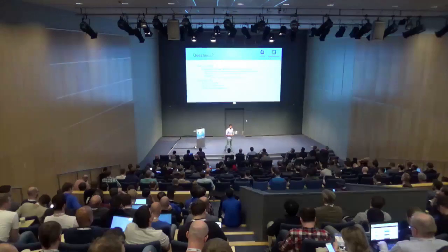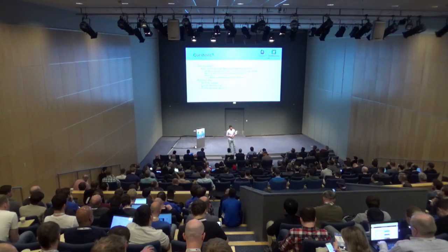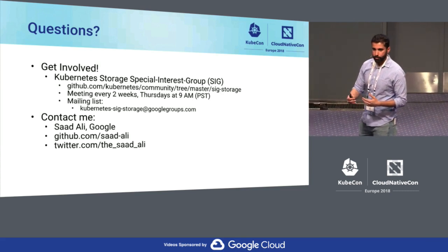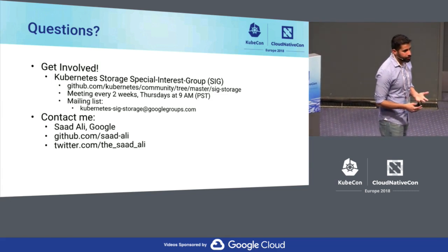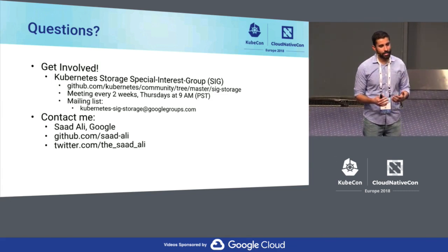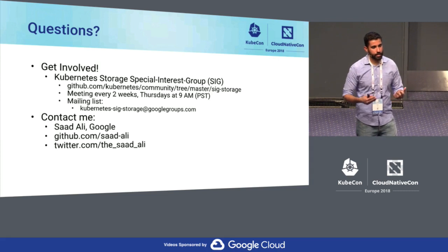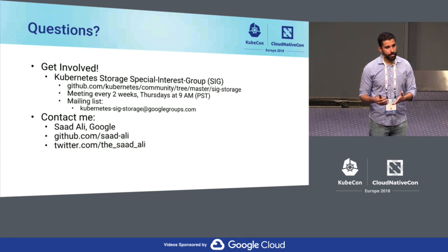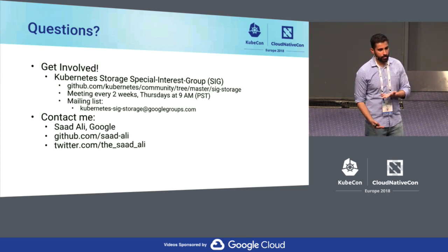Question: Does the abstraction of CSI being out of tree affect performance, latency, or IO? No — because Kubernetes is not in the data path. Kubernetes is strictly in the control path: its responsibility is to set up a volume, expose it as file or block into the container, and then get out of the way. When you read or write from a file system, you're writing through the kernel directly to the underlying storage system.